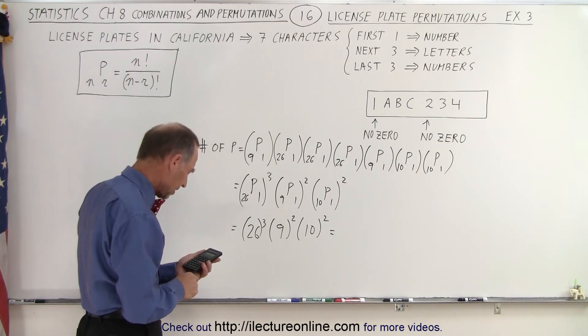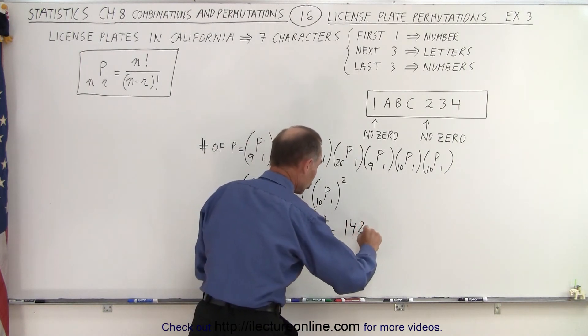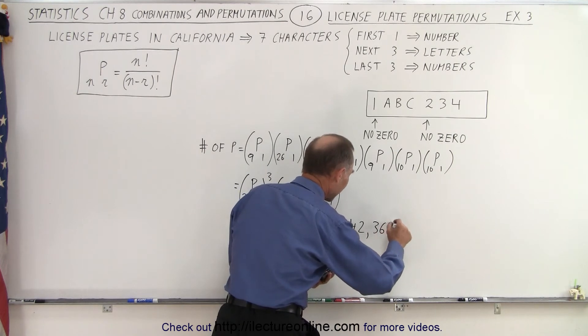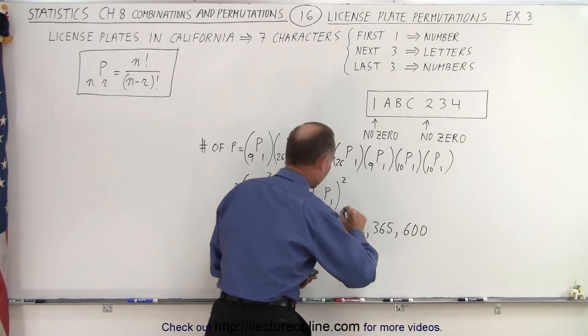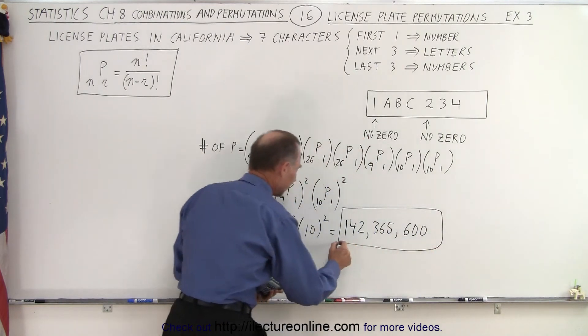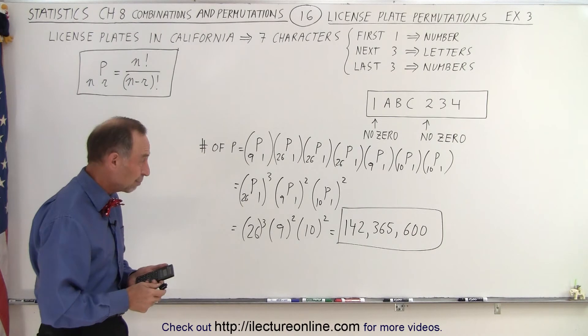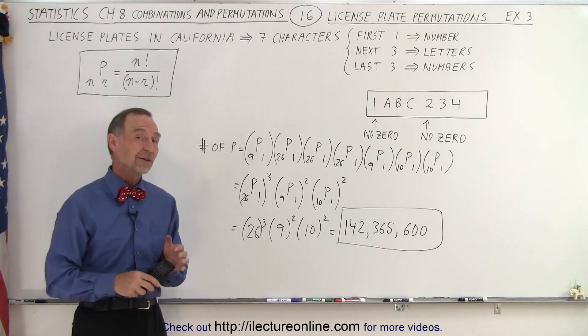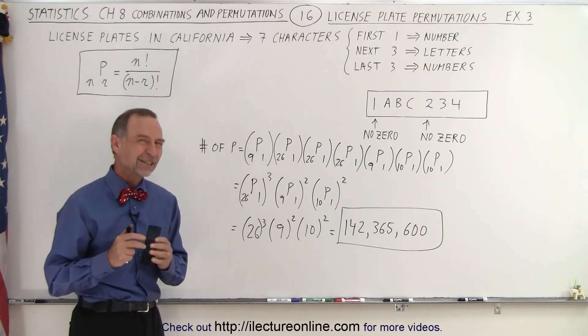And let's see here. Wow. Well, that gave us a total of 142,365,600 different license plates. And for a population of California being somewhere around 40 plus million or so, you would think that should last us for a very long time, but it didn't. We ran out and we had to go to a different scheme.